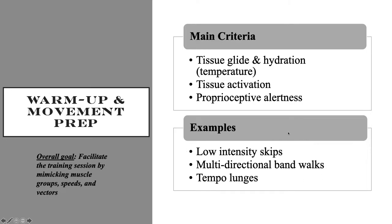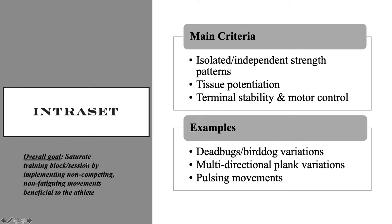Notice nothing here says foam roll or get your theragun on your trigger points. This is basic stuff we all do. The overall goal with warm-up and movement prep is to facilitate the training session by mimicking muscle groups, speeds, and vectors that will be experienced in training. For intraset work, our goal is to saturate the training block by implementing non-competing, non-fatiguing movements that are beneficial to the athlete — isolated and independent strength patterns, tissue potentiation, and terminal stability and motor control.